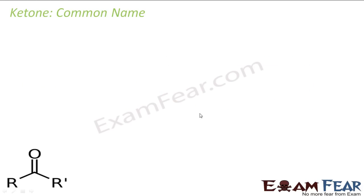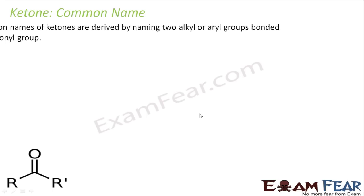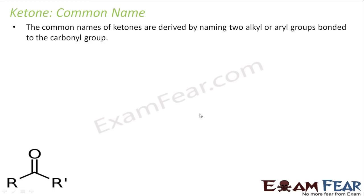First we'll learn how to name the common names of ketones. The common names of ketones are derived by naming the two alkyl or aryl groups bonded. For example, if you see this ketone, I have two alkyl or aryl groups, R and R', and you have to name these two to get the name of the ketone.